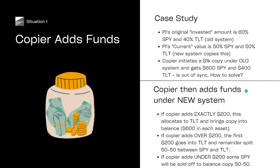The upshot is regardless of whether the system needs to kick in or not — and you could call that $200 a threshold, whereby if you put less than $200 the system will need to take action, and if you put $200 or more the system will not need to sell anything — regardless of whether it does, you will end up with a copy that's synced 50-50 one way or the other, which is great because it wasn't before under the old system.